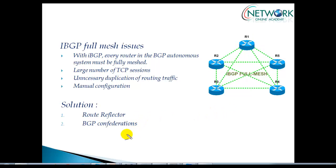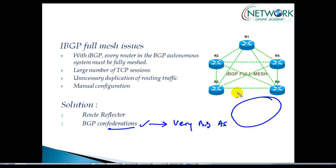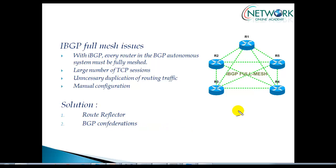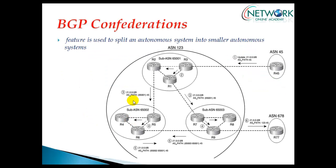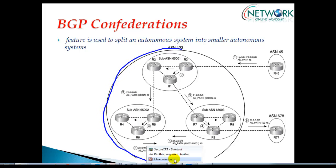Apart from that, we also have one more possible solution called BGP confederations. BGP confederations is more applicable if you have a very big AS — a service provider AS where you have 40 to 50 routers or more inside that AS. In BGP confederations, we are dividing one big autonomous system number into smaller parts.